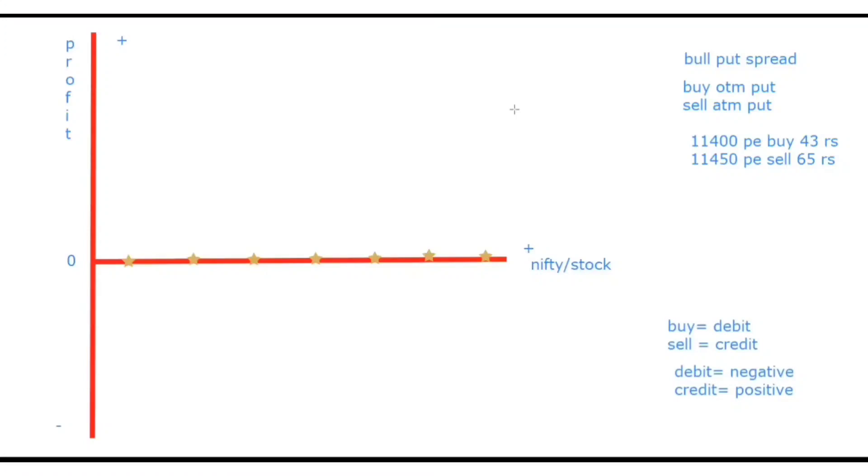11,400 is the lowest strike. 11,450 is the highest strike. Now again we will do our basic golden rule. 11,400 PE buy. Buy debit debit negative. Zero ke niche line banao.